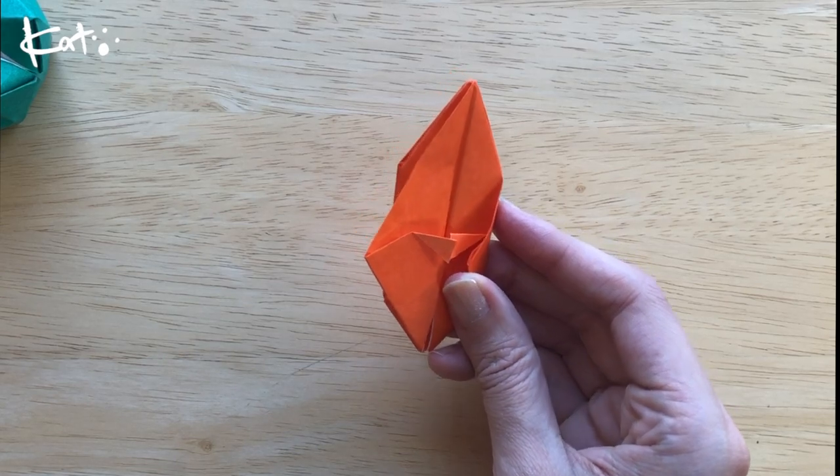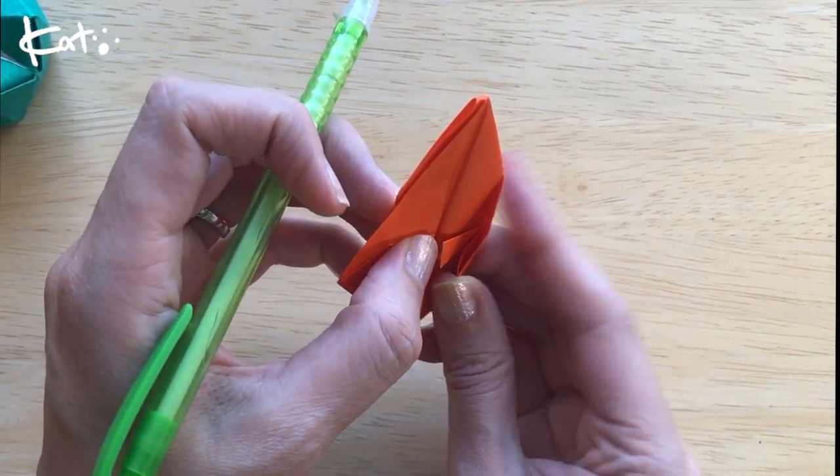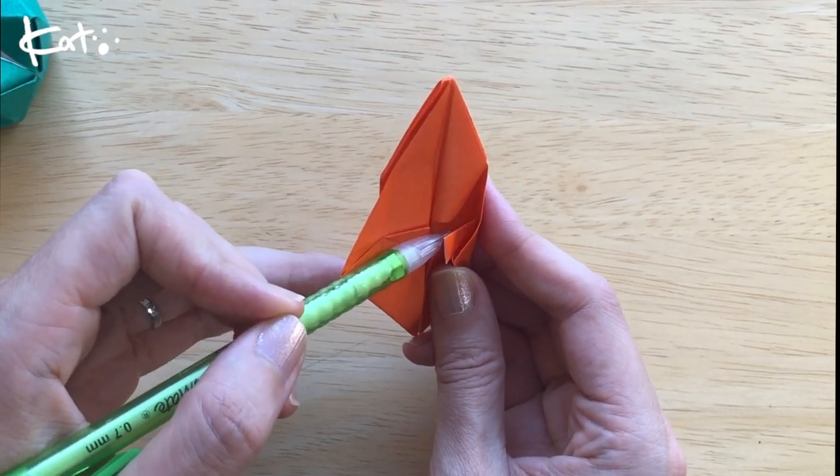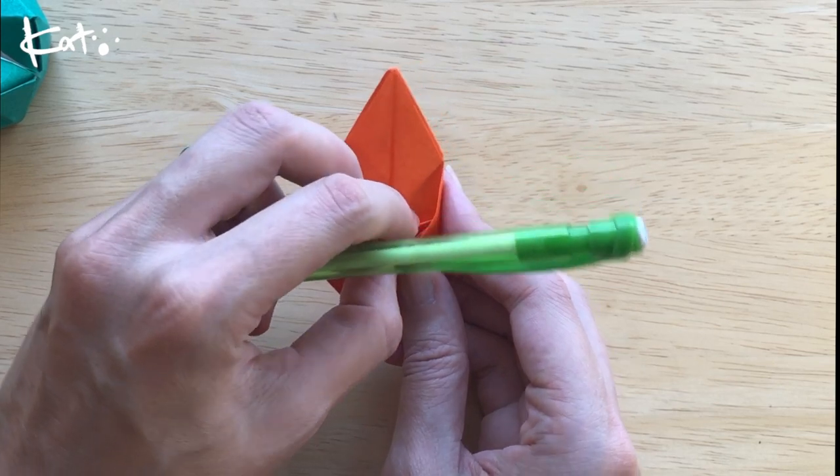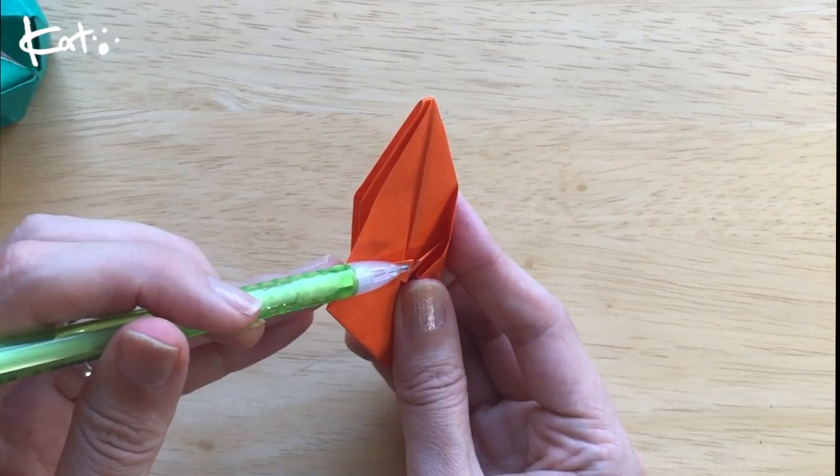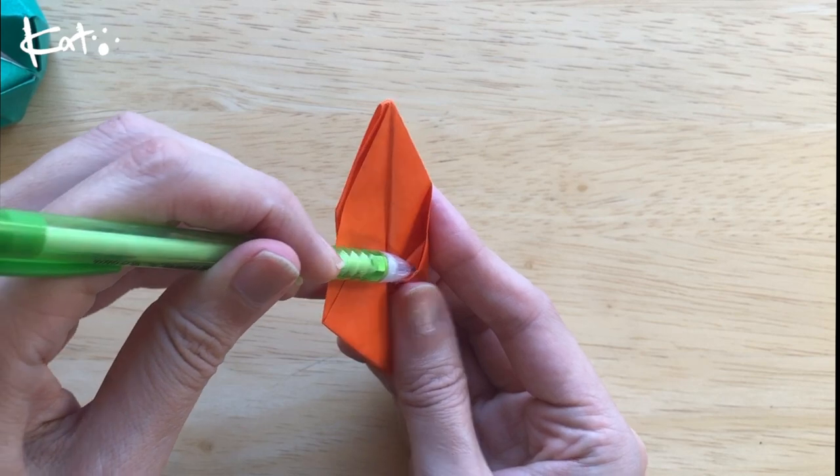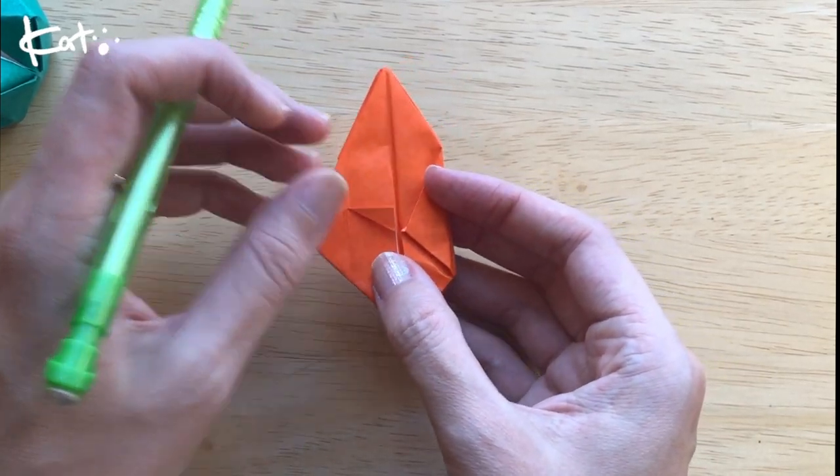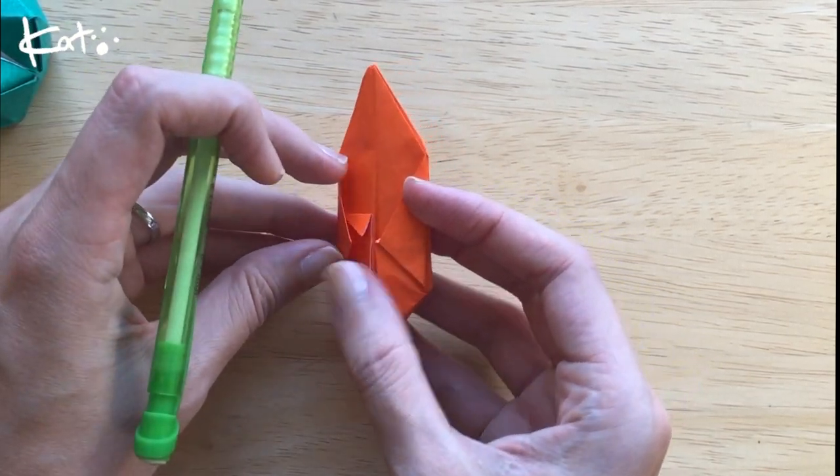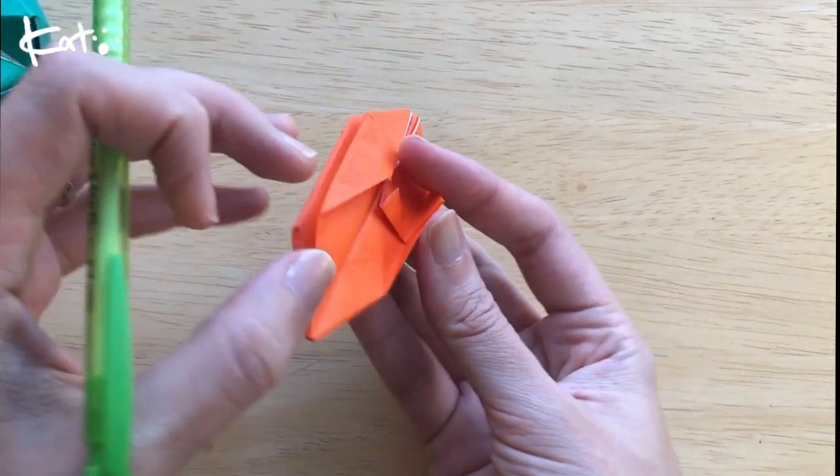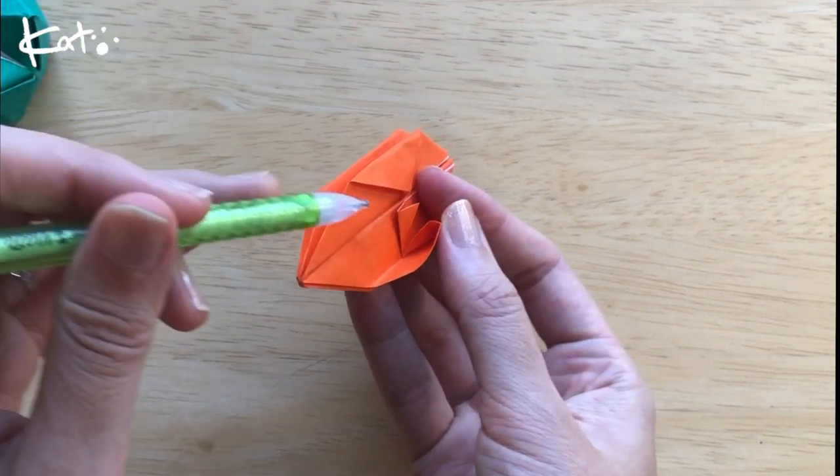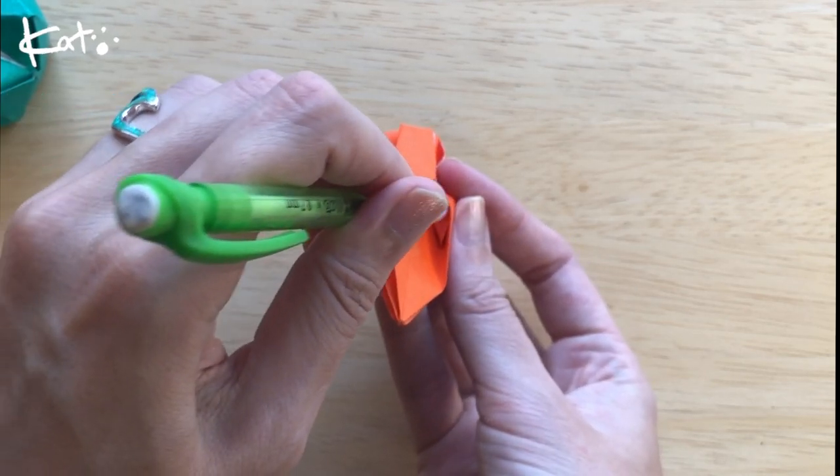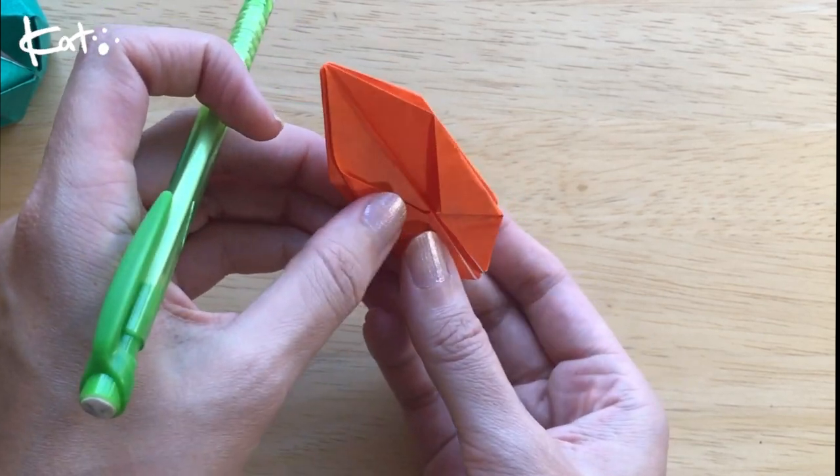But you might need a pin or maybe like a toothpick or something to make this work. My fingers have a hard time getting in here. So I'm getting a pin with a sharp point to it. I'm getting that pocket open and then guiding this flap into that pocket right there. Push it in, squeeze it. Do this on the other side. I'm going to flip it over and push it in like that. Great!